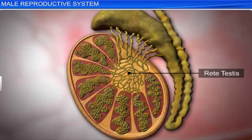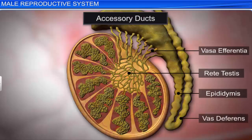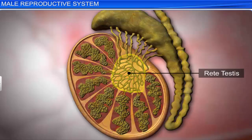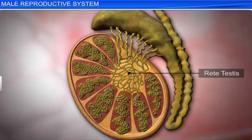The rete testis, vasa efferentia, epididymis, and vas deferens are the male accessory ducts. The rete testis is a network of ductules formed by the seminiferous tubules. Vasa efferentia are ciliated ductules that arise from the rete testis.